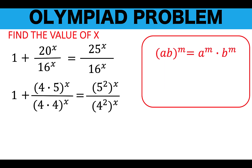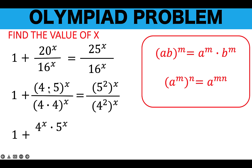Let's recall some properties of exponents. Notice that the quantity 4 times 5 raised to x uses the power of a product property: a times b raised to an exponent equals the first factor raised to that exponent times the second factor raised to the same exponent. We apply this to rewrite the quantity 4 times 5 all raised to x as 4 raised to x times 5 raised to x, and apply the same property to simplify the denominator.